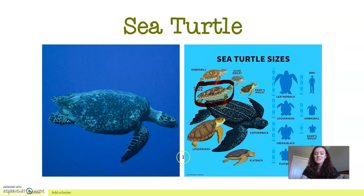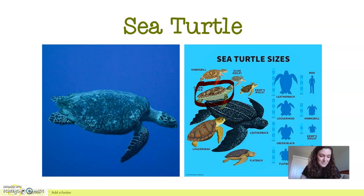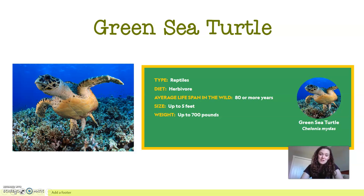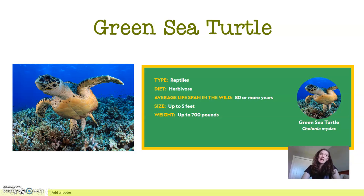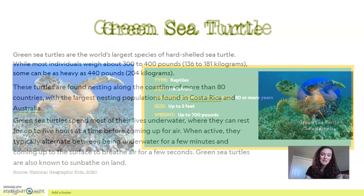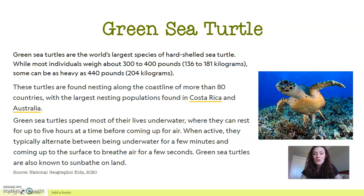Maybe in other episodes I'll outline another one. I was going to do the leatherback turtle, which is the biggest turtle species — they're amazing, they can grow to over eight feet long. But today we're going to be focusing on our green sea turtle. Green sea turtles are part of the reptile family. They are herbivores, which means they only eat plants — they are not carnivores, they are not omnivores, so they only eat plant-based diets. They live for 80 years or more and grow up to five feet. And get this — they can weigh up to 700 pounds. Green sea turtles are the world's largest species of hard-shelled sea turtles. The leatherback sea turtle is the largest overall, but they don't actually have hard shells — they have a softer, rubber-like shell.